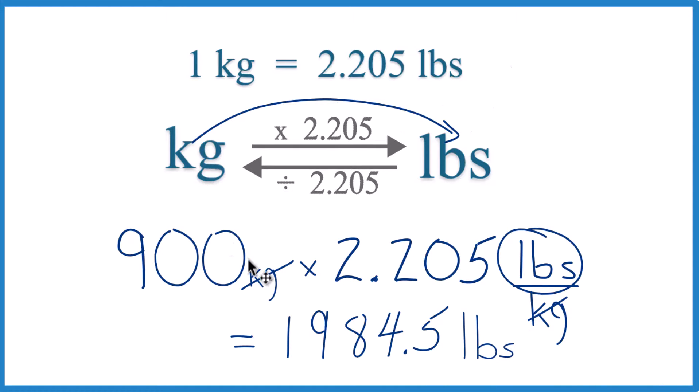When we convert 900 kilograms to pounds, we have 1,984.5 pounds.